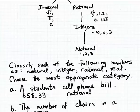Remember, rational numbers are also real numbers, so we could also indicate that a real number is used to measure this quantity. But we want to choose the single most appropriate category, so I think that would be a rational number.